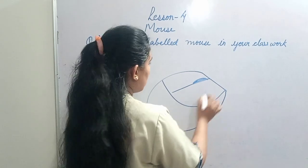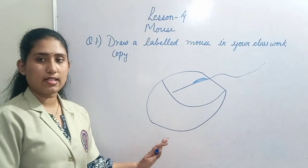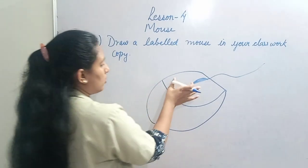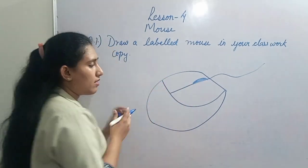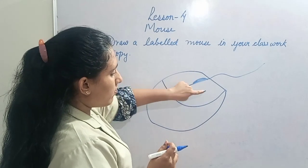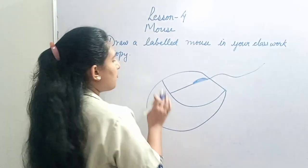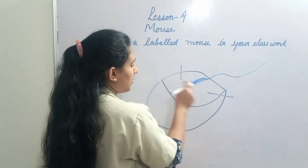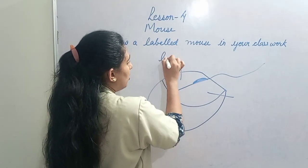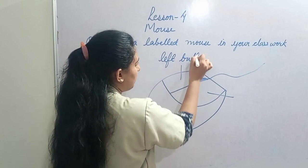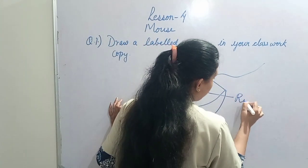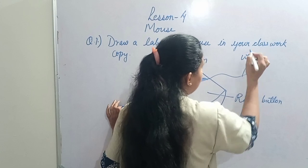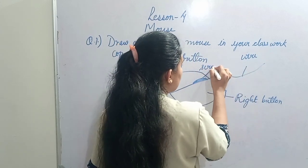You have to draw the mouse like this. A right-handed child holds it this way, and a left-handed child holds it this way. The index finger will be on the right button and the middle finger will be on the left button. This is the left button and this is the right button - regardless of which hand you use. Label: left button here, right button here, wire here, and scroll wheel here.